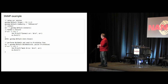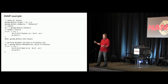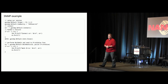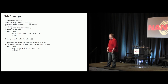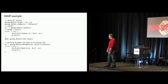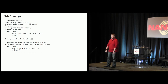This is just an example of an SNMP walk using the Go SNMP library, because I know a lot of us are still doing SNMP. I just want to give an example of what that code looks like — it's not that different from Python.